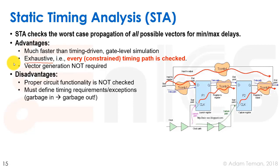The disadvantages are that we do not check proper circuit functionality — we need different types of functional verification for that. We also have to define timing requirements or constraints. And if we add all kinds of wrong timing requirements or exceptions, we may block real timing violations. Garbage in brings garbage out, so you have to be really careful about what you're defining and how it affects the design.